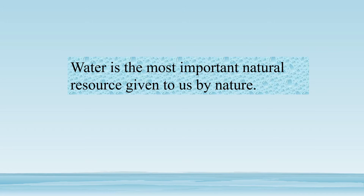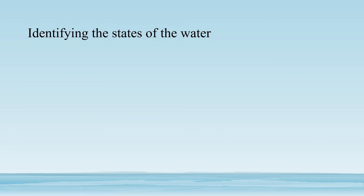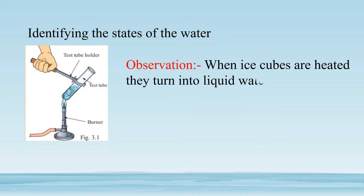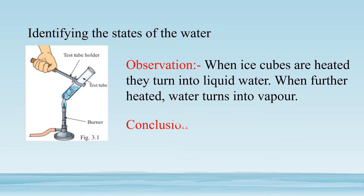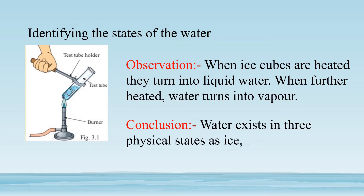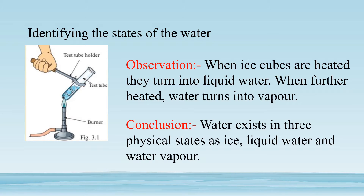Water is the most important natural resource given to us by nature. Let's identify the states of water. In this activity, take ice cubes and put them into a test tube, then heat the test tube as shown in the figure. When ice cubes are heated they turn into liquid water. When further heated, water turns into vapor. The conclusion is: water exists in three physical states — ice, liquid water, and water vapor.